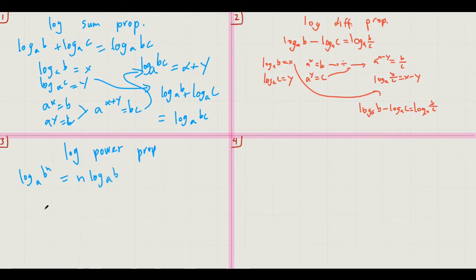And the way you prove this is, you realize that, if log a to the b equals x, that means a x equals b. And then to gain this equation, to gain this expression right here, you would raise both sides by a power of n to make a to the xn equal to b to the n.